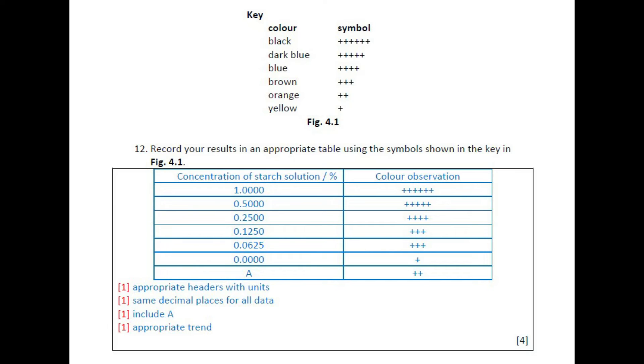So whatever results you get, make sure your results table reflects that trend, and whatever results you get for A, make sure when you predict the concentration of A, it is according to your results as well. In this case, A would be estimated to have a concentration between 0 and 0.0625%. Make sure your estimates are in a range and has units. So that's our qualitative test.